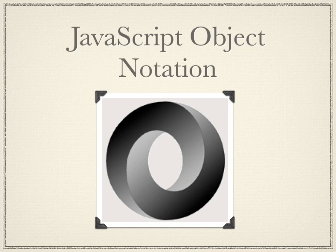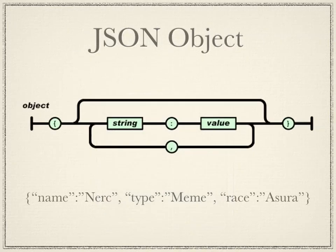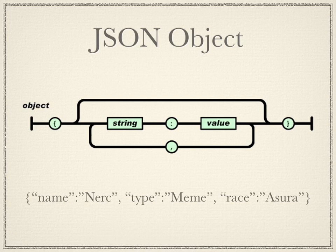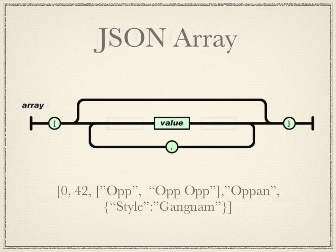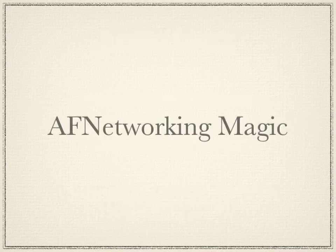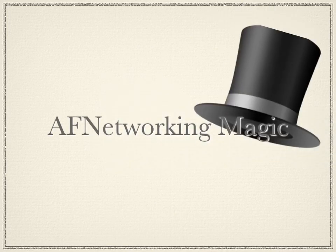JSON has an object type that starts with a curly brace and contains key-value pairs — a string key, a colon, and a value. A value can be another object, a string, a number, true, false, null, or even an array. An array starts with a square bracket and can contain objects, other arrays, or any of those value types. Luckily AF Networking has magic built in that automatically converts JSON into NSObject equivalents: a JSON object becomes a dictionary, an array becomes an NSArray, and strings become NSStrings.